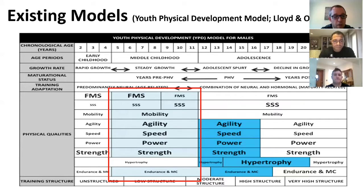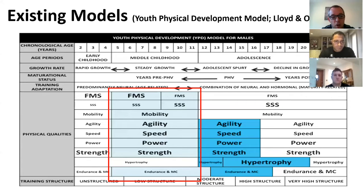There are also other existing models. This one is the Youth Physical Development Model from Lloyd and Oliver, which suggests the importance of developing athletic qualities for children at young ages, including fundamental movement skills and physical athletic abilities such as agility, speed, power, and strength. There's a range of things we know children need to do, but we're also aware that these problems exist, which questions whether appropriate provision is in place.